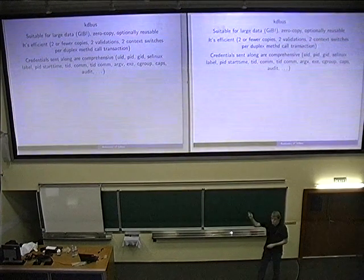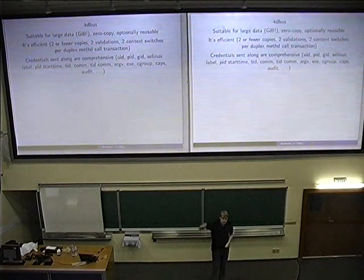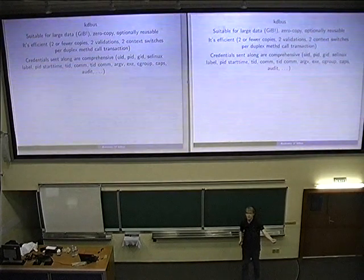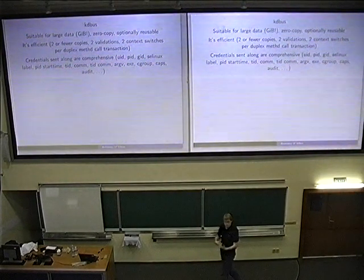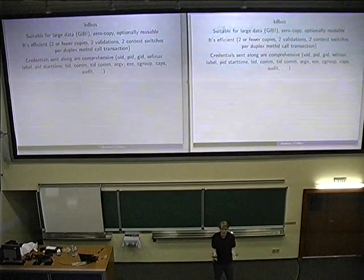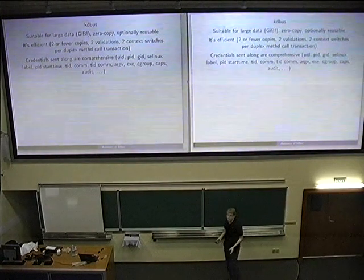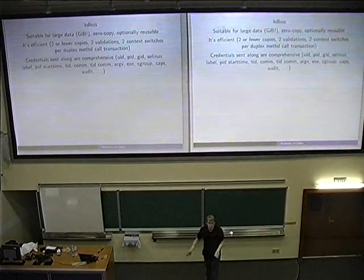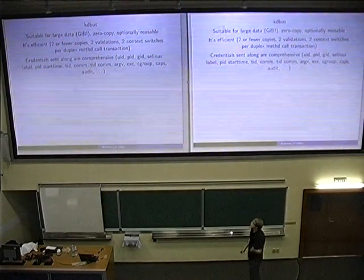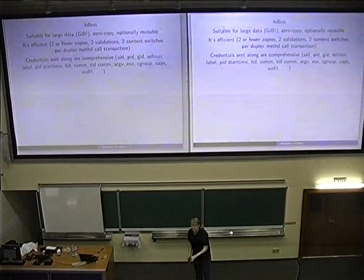The credentials system is extensible, and we do not send all this data all the time. The receiving side has to turn on what it wants to receive. Something like a logging framework like the journal is interested in a lot of this data, so it turns on many bits. But for most applications, they don't care about the comm field of the thread, so they don't turn on those bits. If they don't turn it on, it won't be attached and things will be a little faster. We can add more bits later as well.